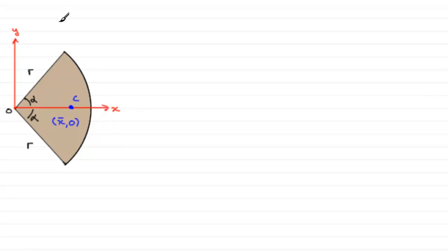And if alpha is an angle in radians, let's just put alpha is in radians, then it can be shown that x-bar equals twice the radius multiplied by the sine of the angle alpha, all divided by 3 alpha.